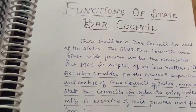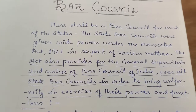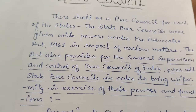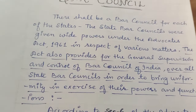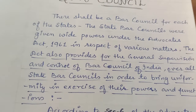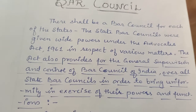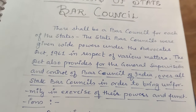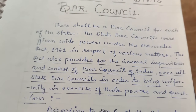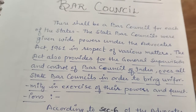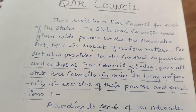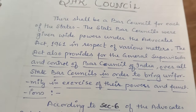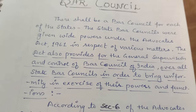The functions of the State Bar Council are — there shall be a Bar Council of each of the states. The State Bar Councils were given wide powers under the Advocates Act 1961 in respect of various matters. The Act also provides for the general supervision and control of Bar Council of India over all State Bar Councils in order to bring uniformity in exercise of their powers and functions.